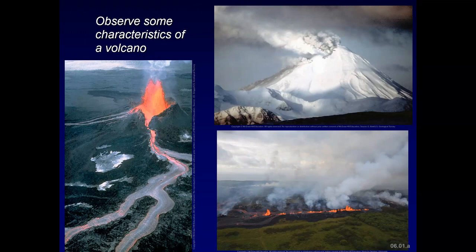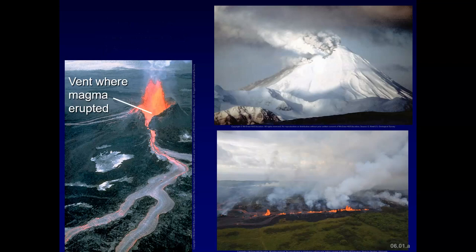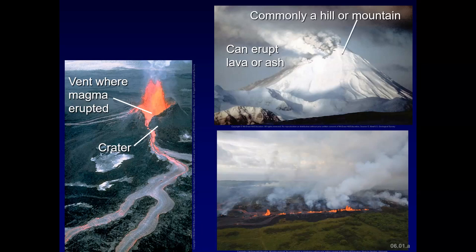Let's look at some characteristics of different volcanoes. Not all volcanoes have a classic cone shape, but many of them do. We can point to the vent where magma has erupted, and there's a crater within that. Volcanoes can erupt lava or ash, and commonly we see them as hills or mountains. But they can also erupt from what's called a fissure or a depression — not a hill, but kind of a flat area. This fissure photograph is from Hawaii.